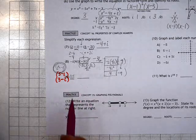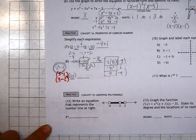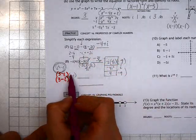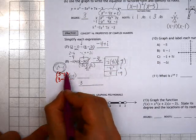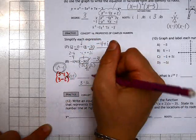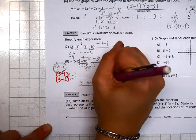On the top, 3 minus i is going to multiply 1 minus i by using FOIL, or the distributive property. So if we go term by term on the top, 3 times 1 is 3, 3 times negative i is negative 3i, negative i times 1 is negative i, and negative i times negative i is positive i squared.